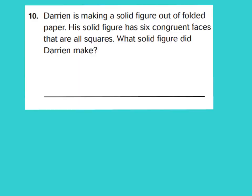Let's read number ten together. It says: Darian is making a solid figure out of folded paper. His solid figure has six congruent faces that are all squares. What solid figure did Darian make? If a figure has all squares, that would be an example of a cube, also called a square prism.